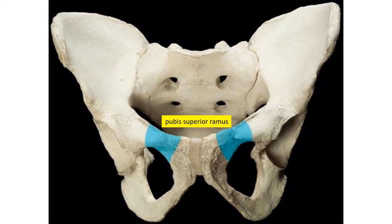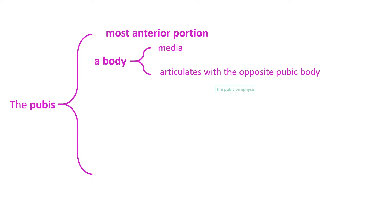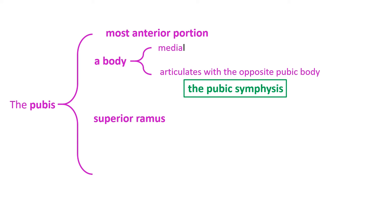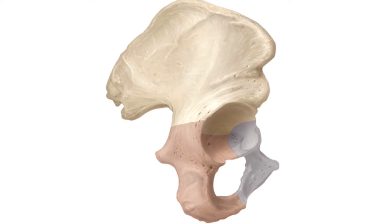The hip bone is made of three bones. The pubis shares in the formation of the acetabulum and has a superior ramus and an inferior ramus. The blue colored part is the superior ramus of the pubis, the body of the pubis connects with the other pubic body by pubic symphysis, and the white part is the pubic portion of the inferior ramus, which is shared by the ischium.